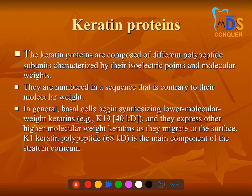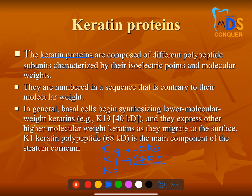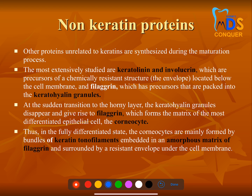Keratin is the most important protein in the epithelium. You'll commonly encounter keratin proteins numbered K19, K1, K9, and so on, along with their molecular weights. Note that as the keratin number decreases, the molecular weight increases — they are inversely related. So a lower keratin number means a higher molecular weight.